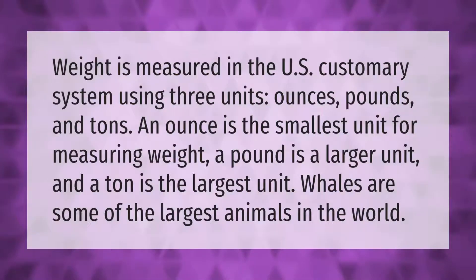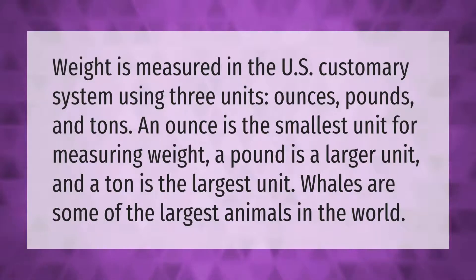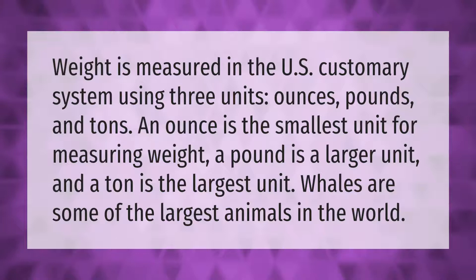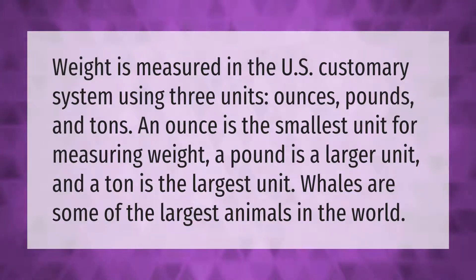Weight is measured in the U.S. customary system using three units: ounces, pounds, and tons. An ounce is the smallest unit for measuring weight, a pound is a larger unit, and a ton is the largest unit. Whales are some of the largest animals in the world.